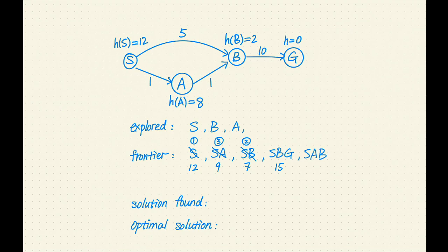Next, S-A-B has the smallest F value of 4. Let's remove B from the frontier. B is already in the explored set. Multi-path pruning happens here and we will not add B's successors to the frontier.